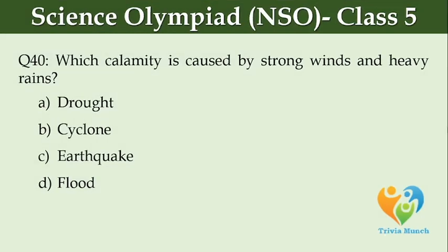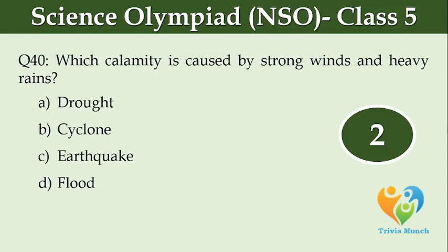Which calamity is caused by strong winds and heavy rains? Option A: drought, Option B: cyclone, Option C: earthquake, Option D: flood.